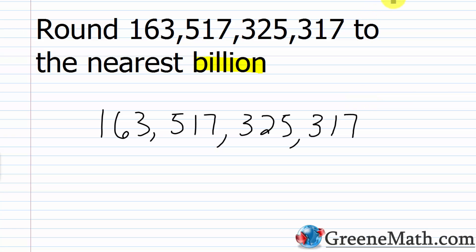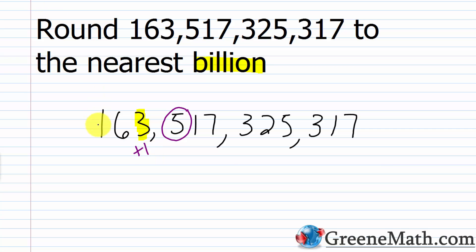So where's the billions place? It's going to be right here — it's this 3. We want to look at the digit that follows the digit in the roundoff place, so that's going to be this 5. The 5 falls into the category of 5 or greater, so we add 1 to the digit in the roundoff place. The 1 and the 6 will stay the same, and 3 plus 1 gives me 4.